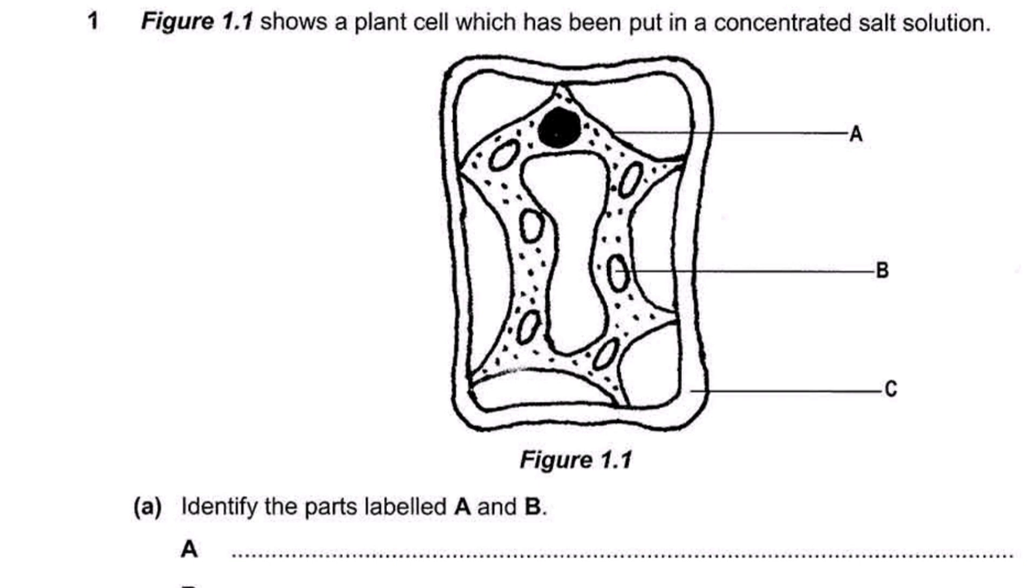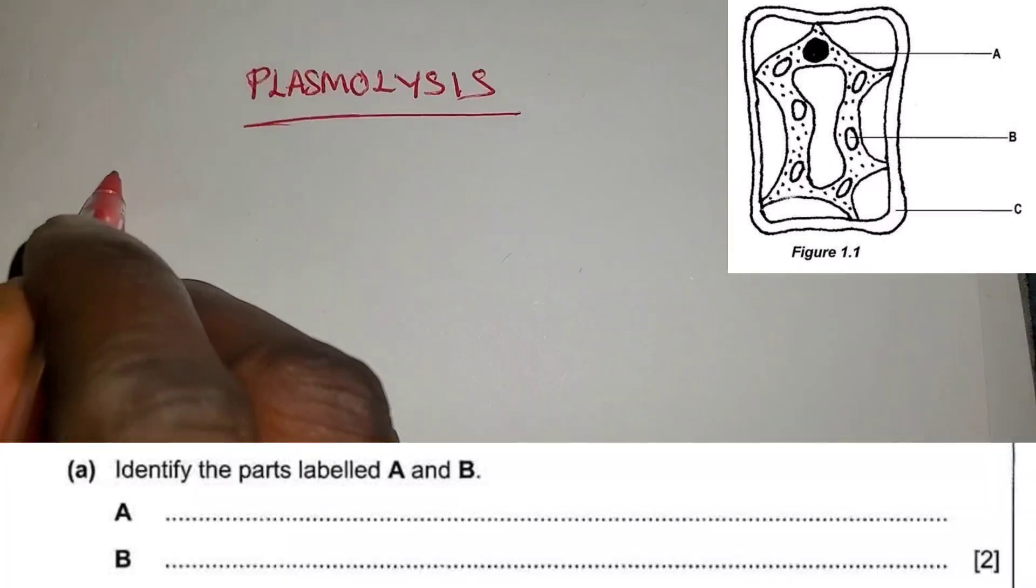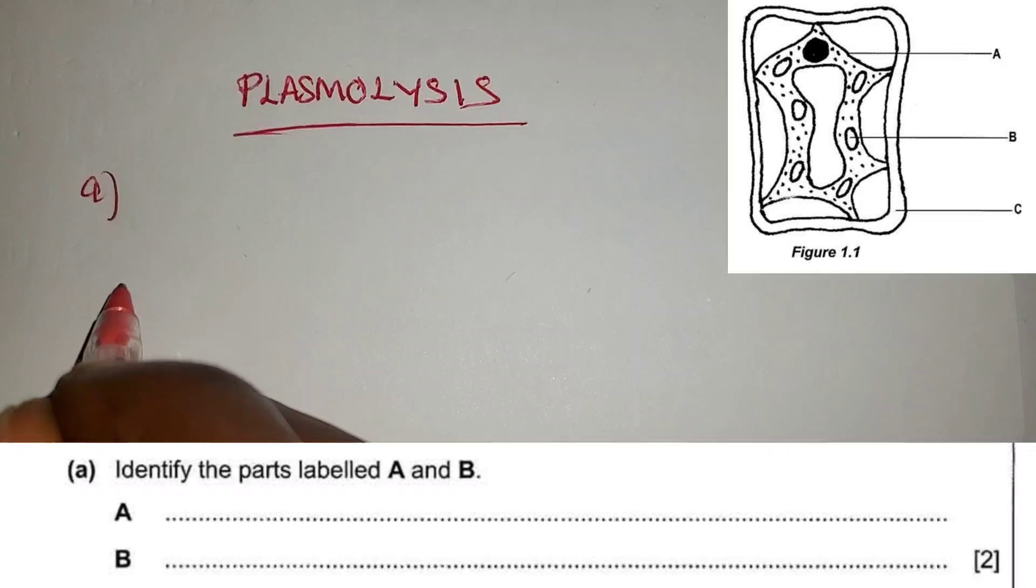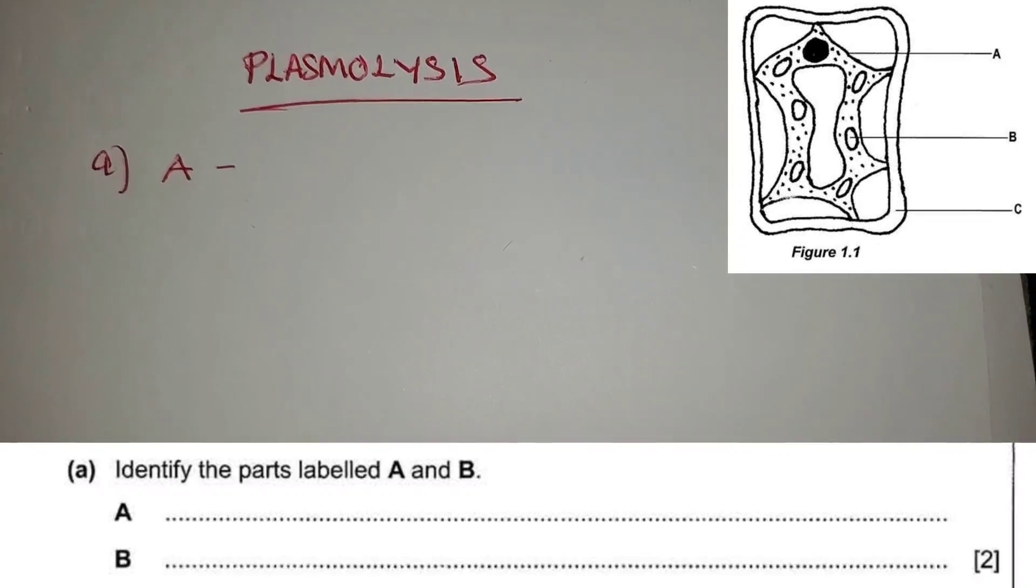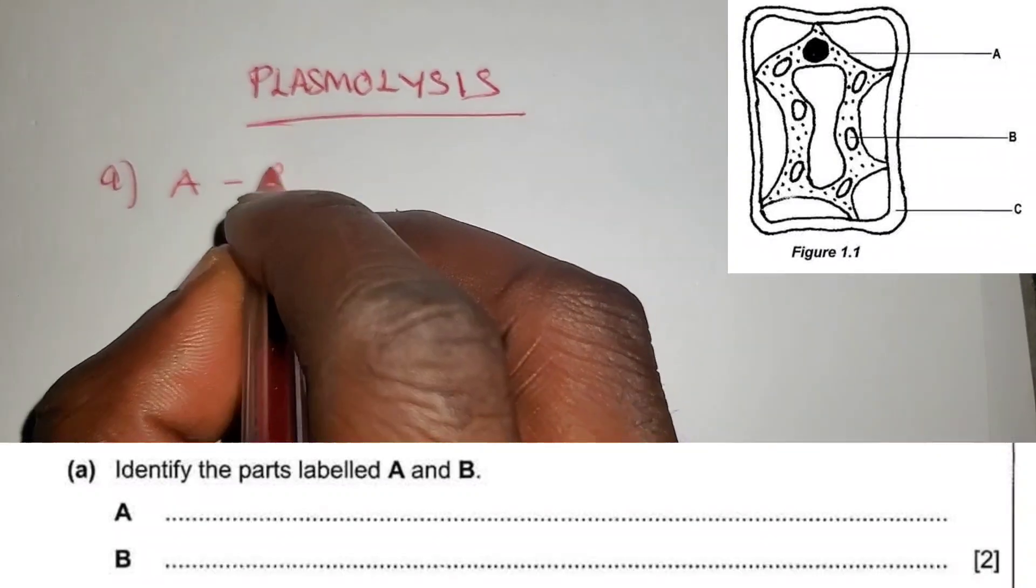Now part A asks to identify the parts labeled A and B. So A is the membrane. It has shifted because it has lost water, so that one is the cell membrane.